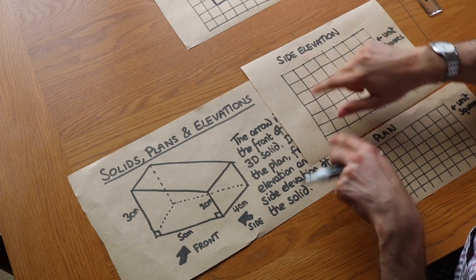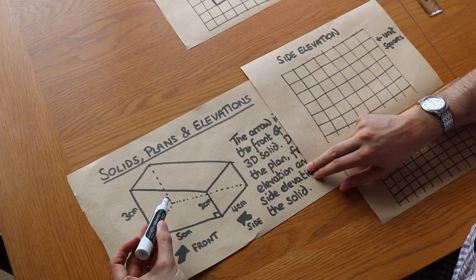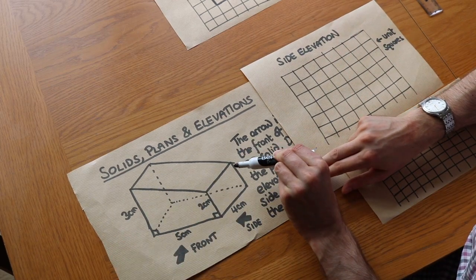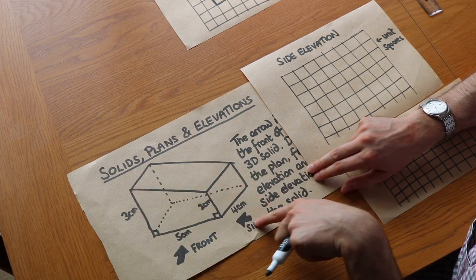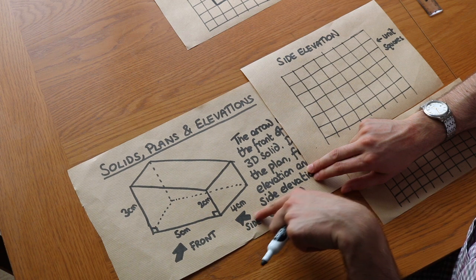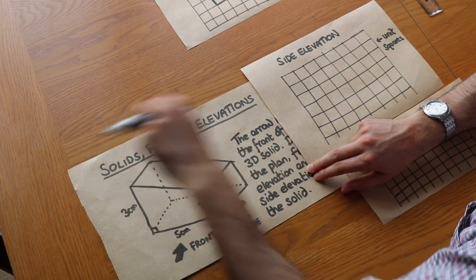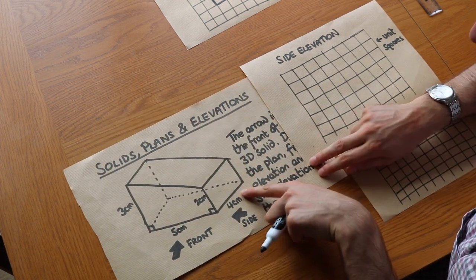What about the side elevation? So this is the front, the side will be from 90 degrees to that so it could be this side or this side and you see slightly different things, but often the question will indicate what side they're talking about whether it's this side or this side. So what will we actually see?